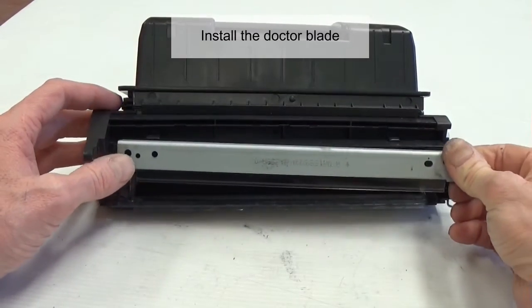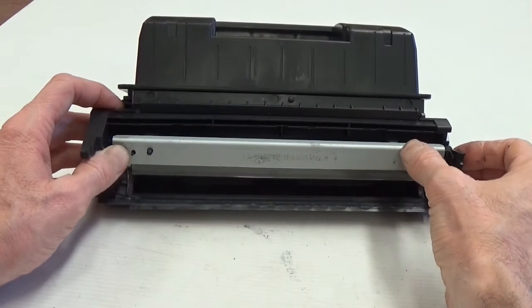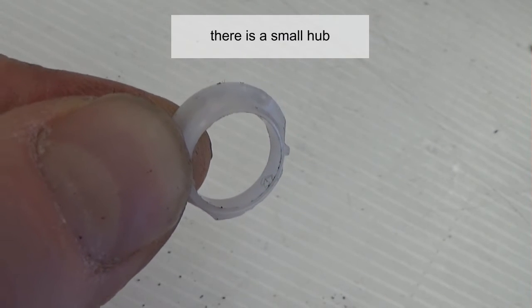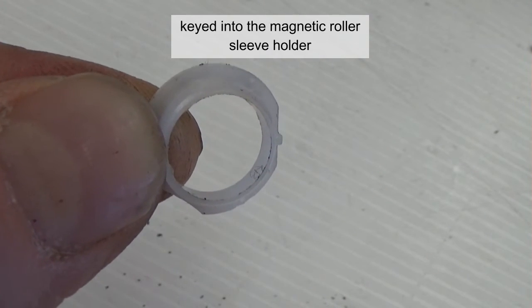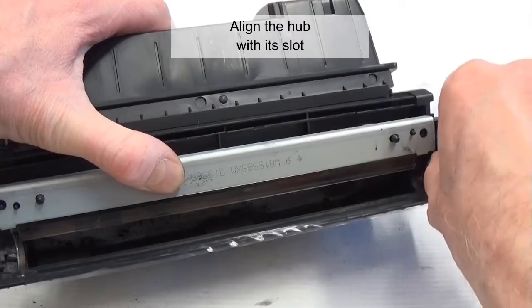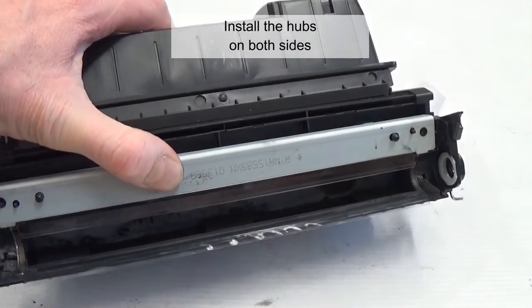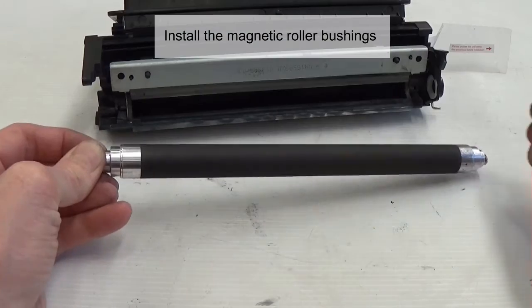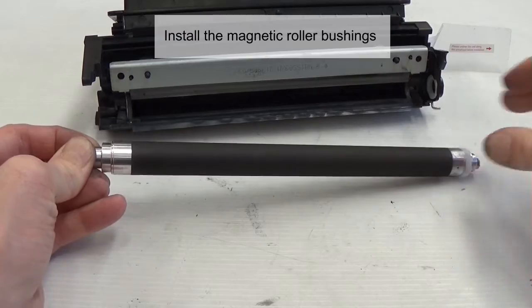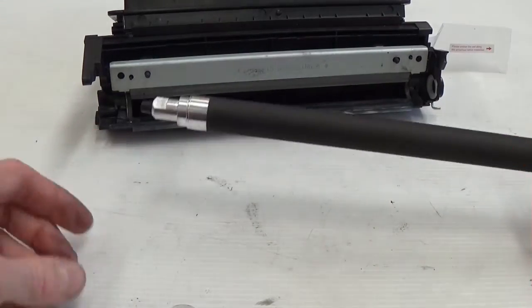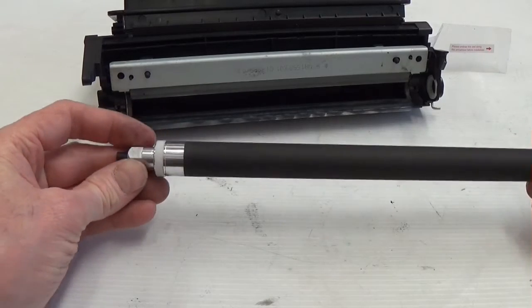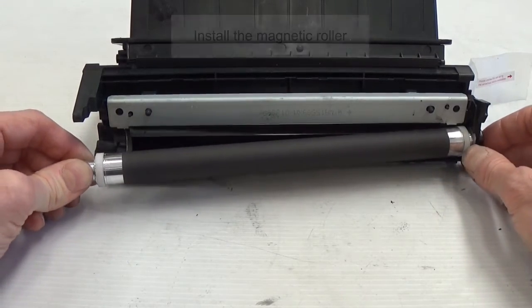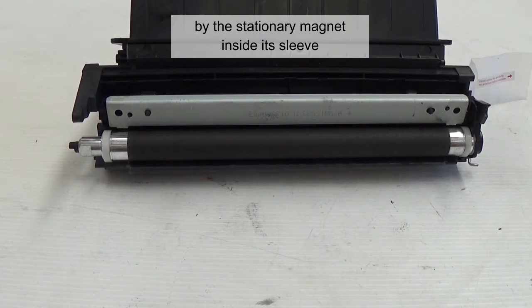Install the doctor blade. On the side of the magnetic roller, there is a small hub keyed into the magnetic roller sleeve holder. Align the hub with its slot. Install the hub on both sides. Install the magnetic roller bushings. Install the magnetic roller. The toner is held on the magnetic roller by the stationary magnet inside its sleeve.